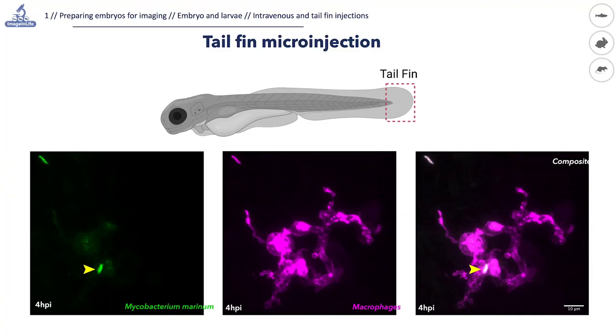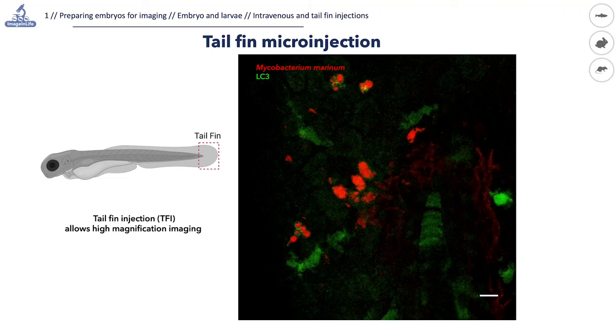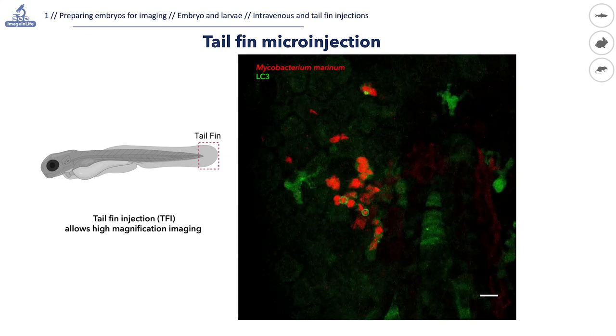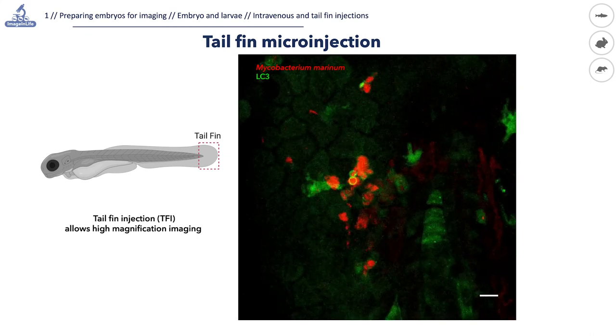You can tell if the injection was correct if an ellipsoid blister immediately appears after the pulse was given. In our laboratory, we use this injection to model tuberculosis disease. Here you can see a representative result of confocal imaging. After a few hours, we can see bacteria that are engulfed by immune cells. We can zoom in even further into the cells and observe how the bacteria reside inside vesicles that might direct them towards degradation.